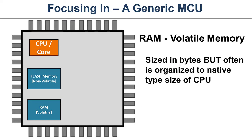Like flash, when you look at a microcontroller on a website, RAM is sized in bytes — eight bits at a time — but it's almost always organized to the native type size of the CPU. The reason is the same as for flash: when the CPU wants to access memory, it's more efficient to do it with bigger data types.